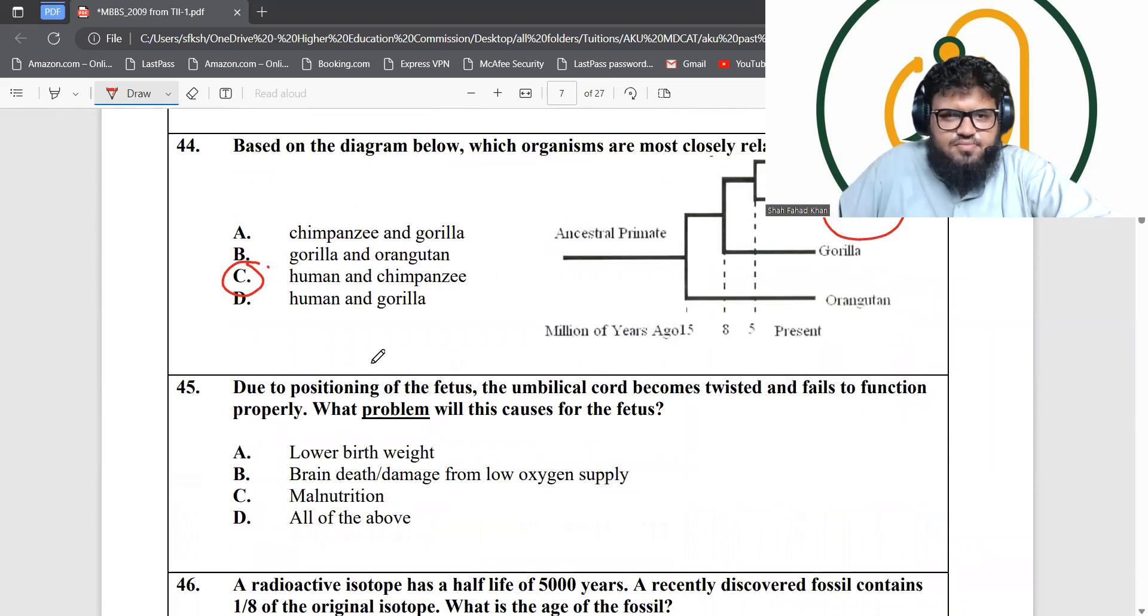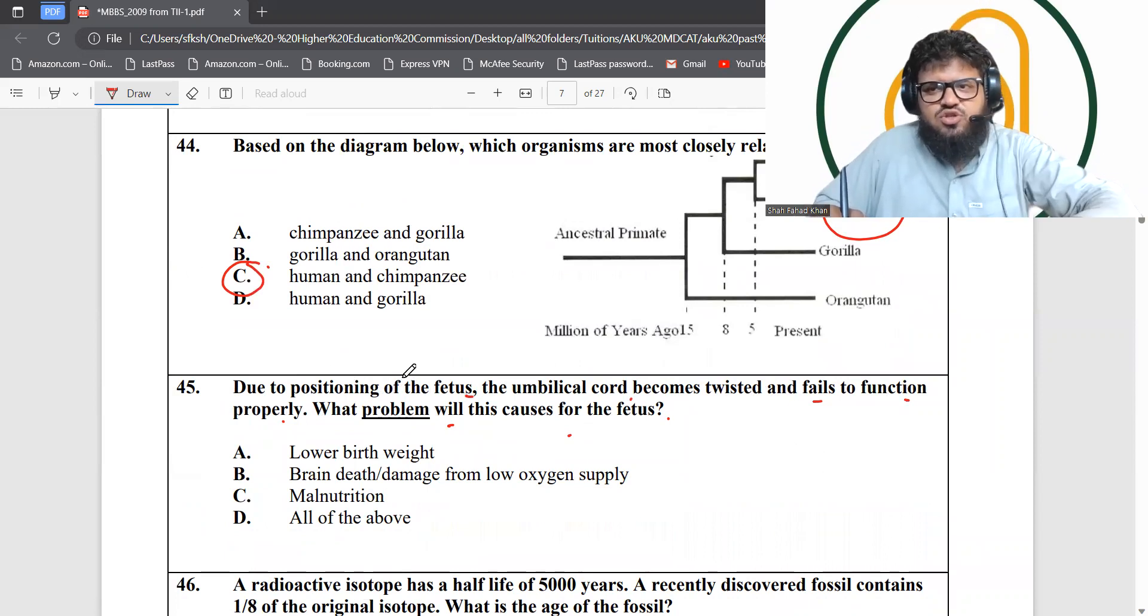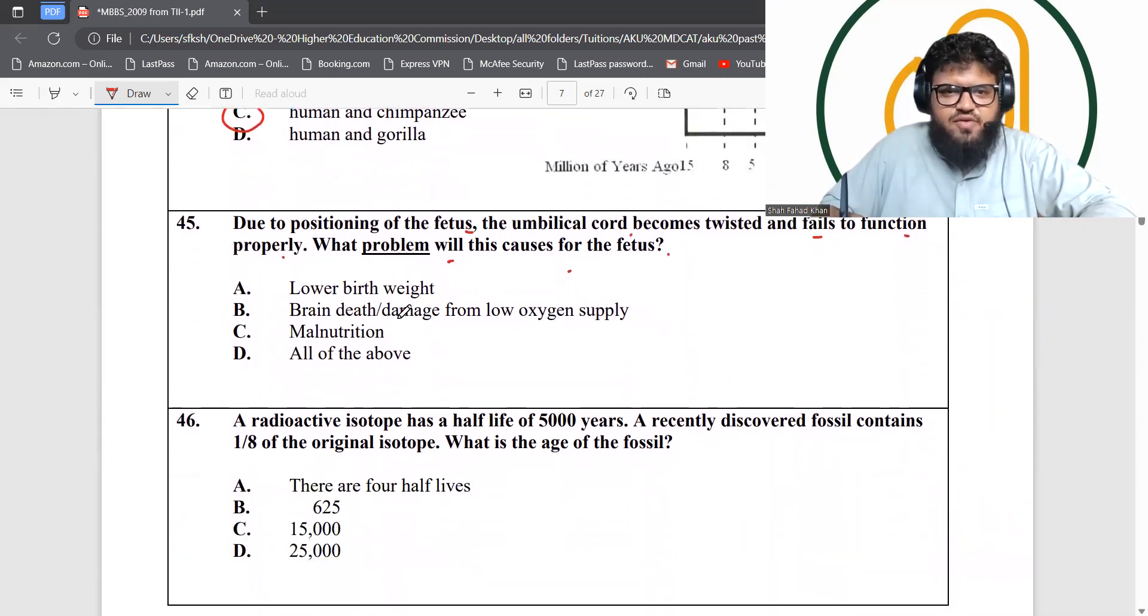Question 45: Due to positioning of the fetus, the umbilical cord becomes twisted and fails to function properly. What problem will this cause? If the umbilical cord twists, it will not supply oxygen or nutrients. Malnutrition would occur and the birth weight of the baby will reduce. Brain damage will occur because of lack of oxygen. Malnutrition will also occur, so all of the above is the best answer.